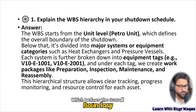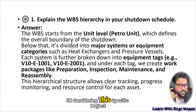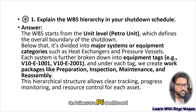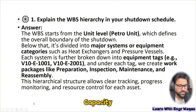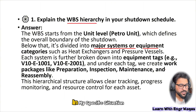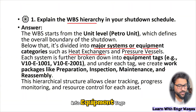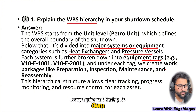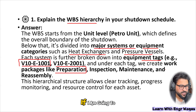The WBS starts from the unit level — the 'Petro Unit' — which defines the overall boundary of the shutdown. Below that it is divided into major systems or equipment categories such as heat exchangers and pressure vessels. Each system is further broken down into equipment tags; for example, there may be five heat exchangers and six pressure vessels, each having its own unique tag. Under each tag we create a work package, such as 'Preparation.' That is our hierarchy.